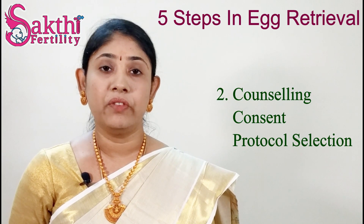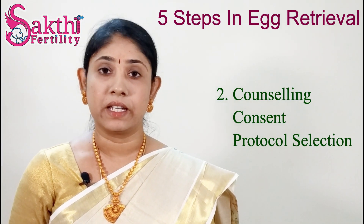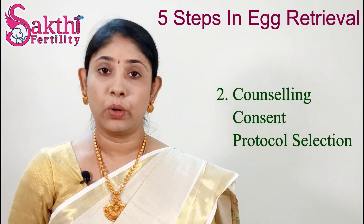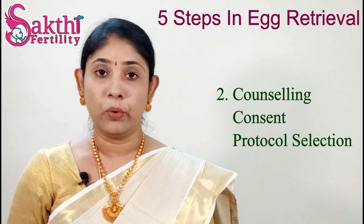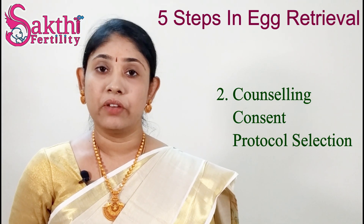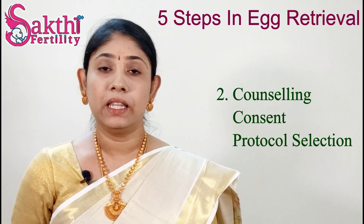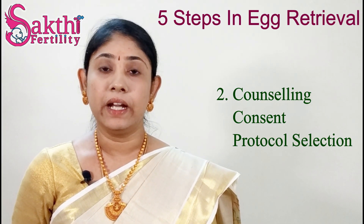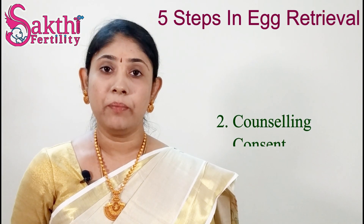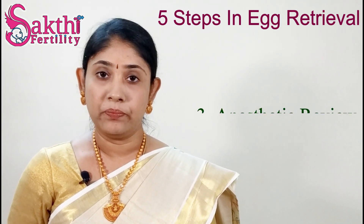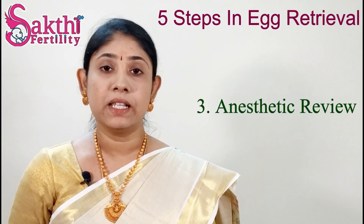After selecting the protocol, we will give you medications — that is the injections, gonadotrophins, and follicle stimulating hormone. We will give it for 9 to 10 days till the follicles get mature and reach a size from 15 to 20 mm.